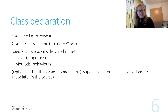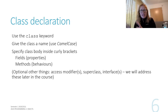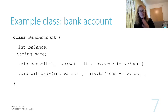You can also add other things, and we'll come to those later in the course — things like access modifiers, super classes, interfaces. But at the core, when you're defining a class, when you're defining an abstraction of some real-world entity, you need to give it a name, you need to say what are the properties, and you need to say what are the behaviors.